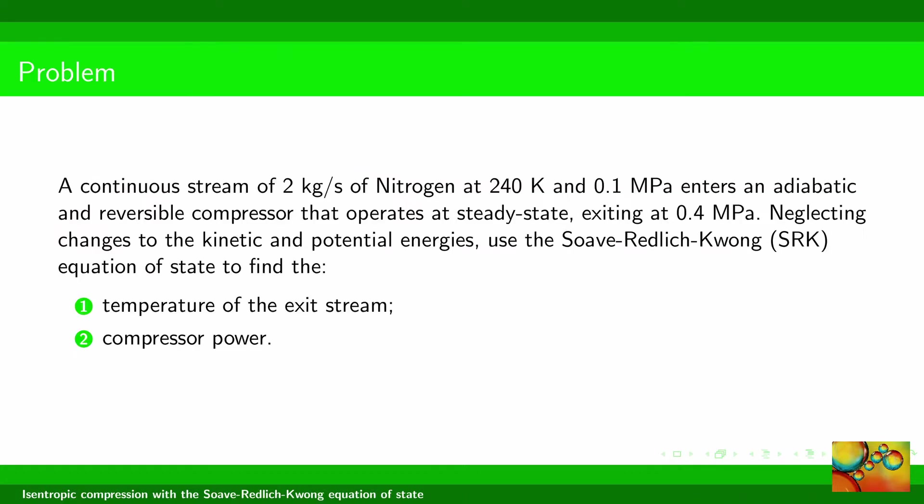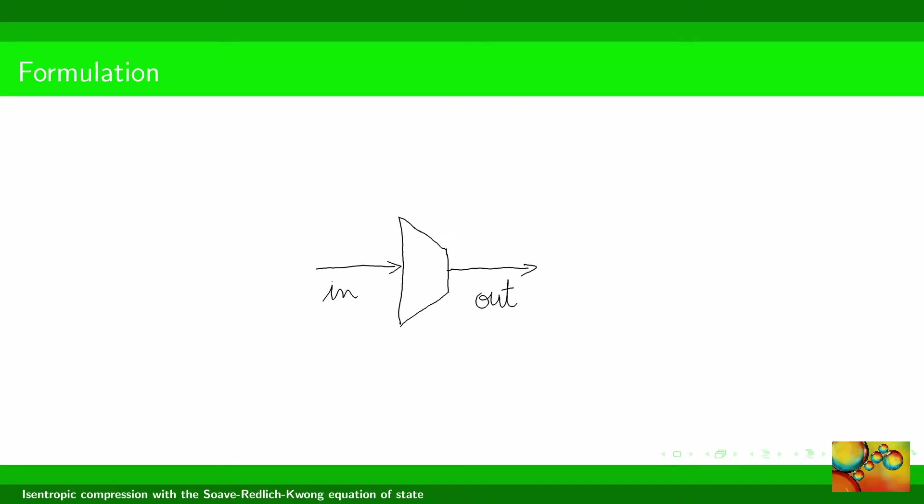Here is a suggested problem. A continuous stream of 2 kg per second of nitrogen at 240 Kelvin and 0.1 MPa enters an adiabatic and reversible compressor that operates at steady state, exiting at 0.4 MPa. Neglecting changes to the kinetic and potential energies, use the Soave-Redlich-Kwong equation of state to find the temperature of the exit stream and the compressor power. This slide shows a schematic of the situation.